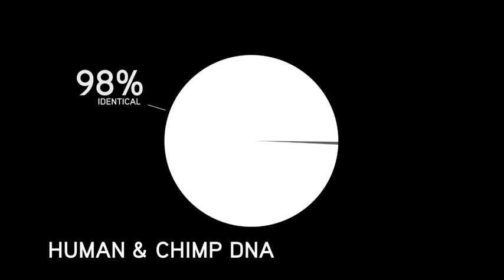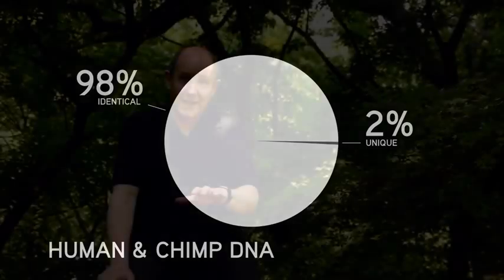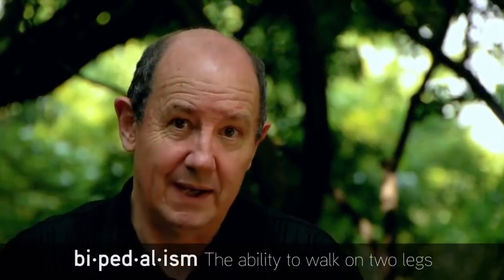If you compare the genes of humans and chimps, you find that about 98% of those genes are identical. That's why modern biologists are convinced that humans and chimps shared a common ancestor about 7 million years ago. Then our lineages split, and our ancestors started walking on two legs — they became bipedal. We call them hominins.